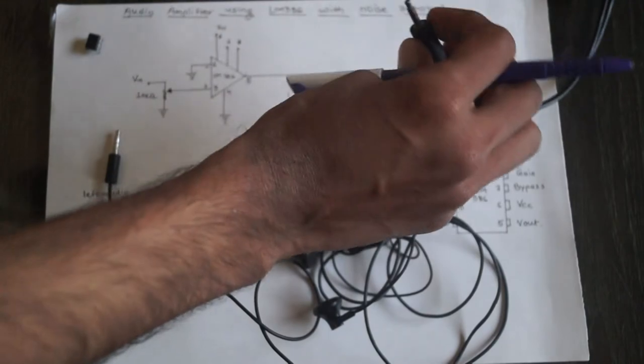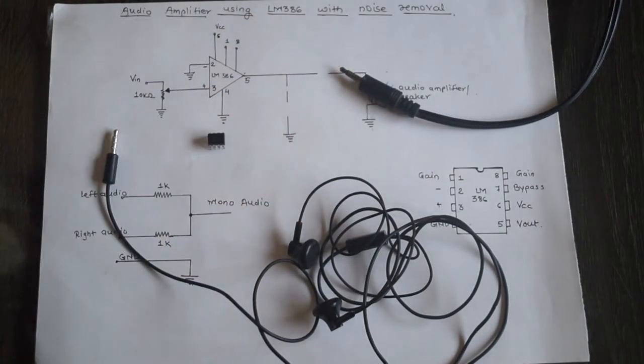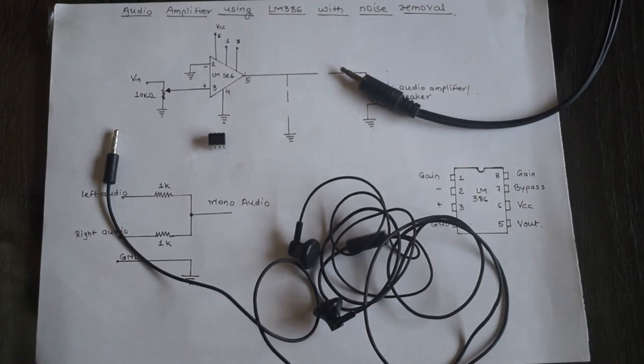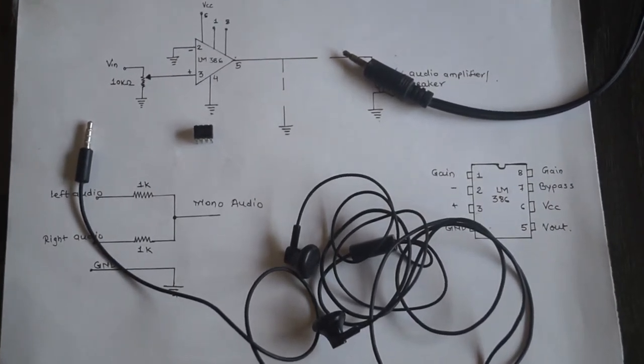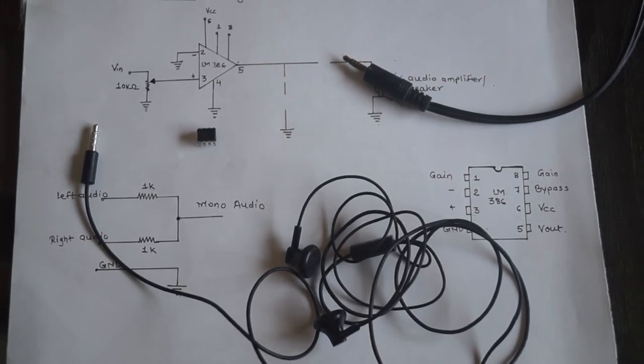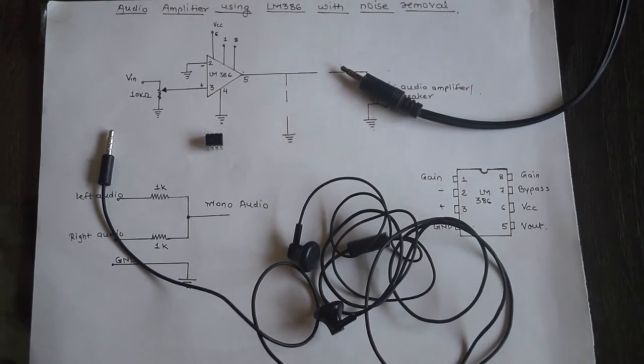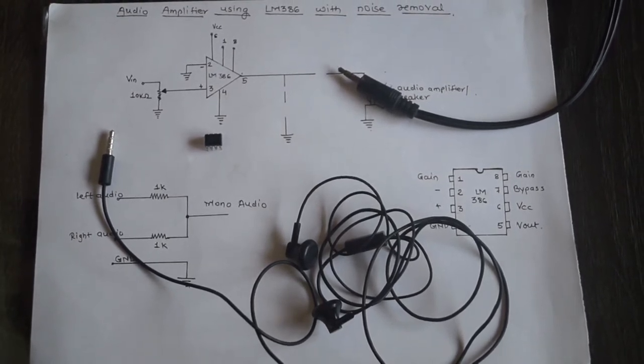Next, we need the LM386 IC, which is very popular for audio amplification. This IC needs minimum external connections. This IC is also battery operated with a wide supply voltage range, 4 to 12 volts or 8 to 16 volts, depending on the different manufacturing series.